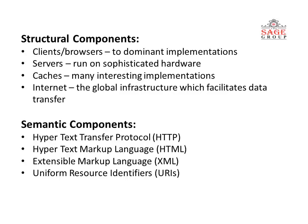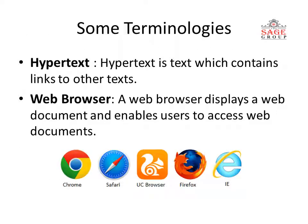Now we come to some terminologies. First is hypertext. Hypertext is a text which contains links to other text. You will see blue-colored links; if you click on any link, it will take you to another text or page — this is called hypertext.